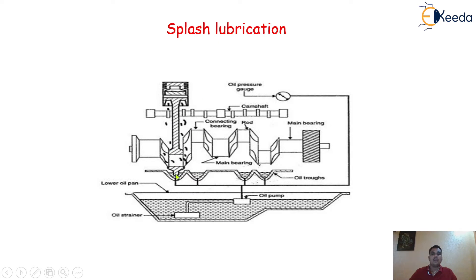This particular dipper or splasher dips into the oil troughs — one for each engine cylinder in a multi-cylinder arrangement. As this particular tip dips inside the oil troughs, the amount of oil splashes over the different engine components, and again it is collected inside the oil strainer directly. So this is called the splash lubrication system.